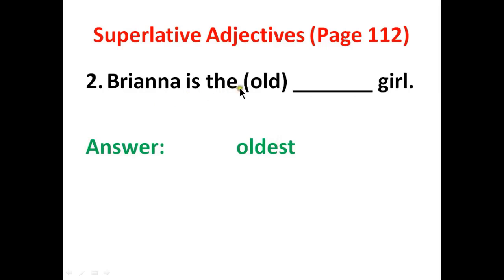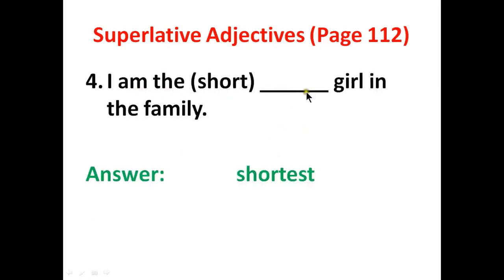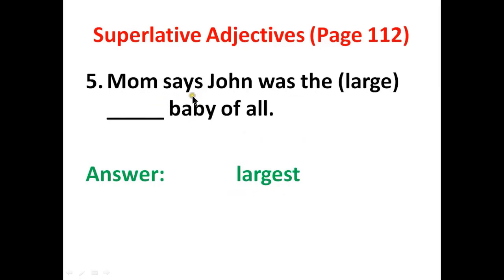Number two: Brianna is the oldest girl. Our answer is 'oldest.' Number three: Even though James is only 12, he is the tallest boy. Number four: I am the shortest girl in the family. Number five: Mom says John was the largest baby of all. Large, larger, largest — the superlative adjective 'largest' is the answer for number five.